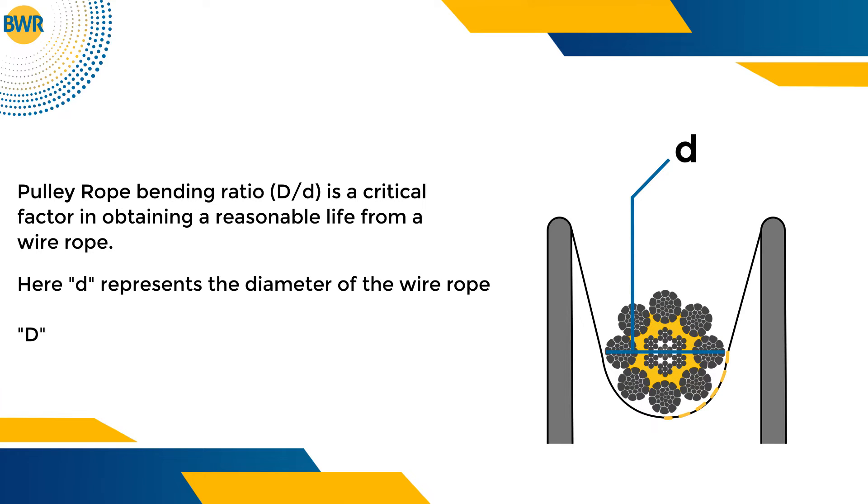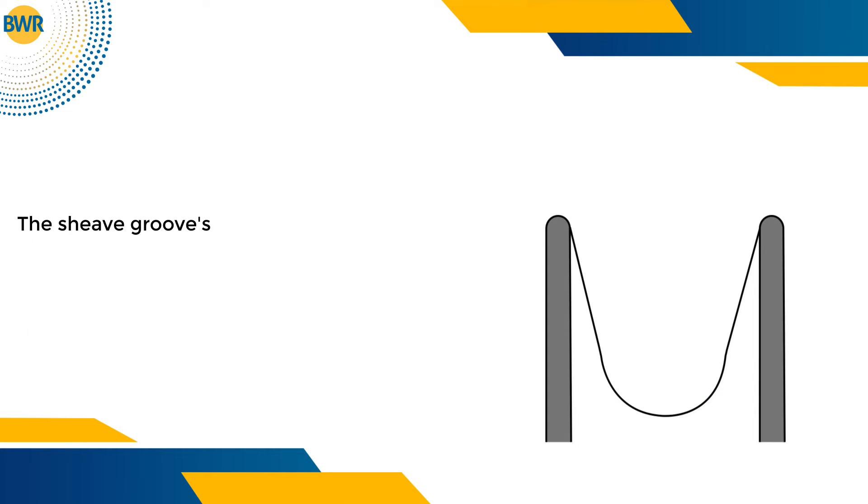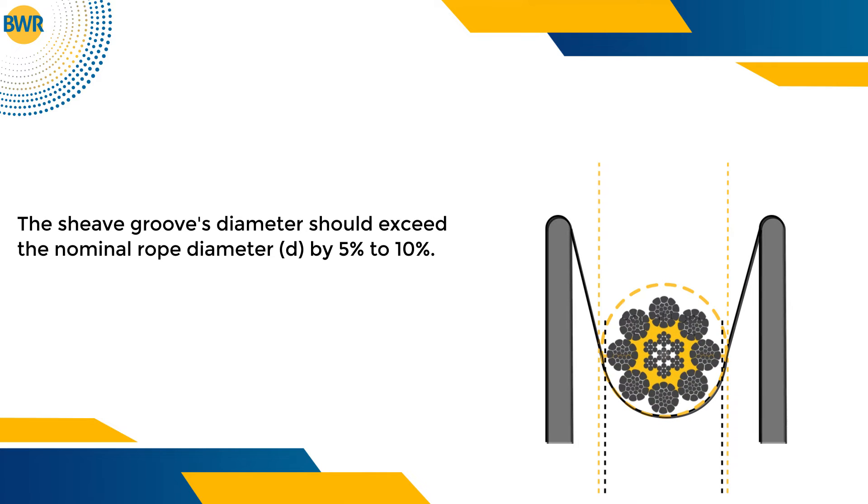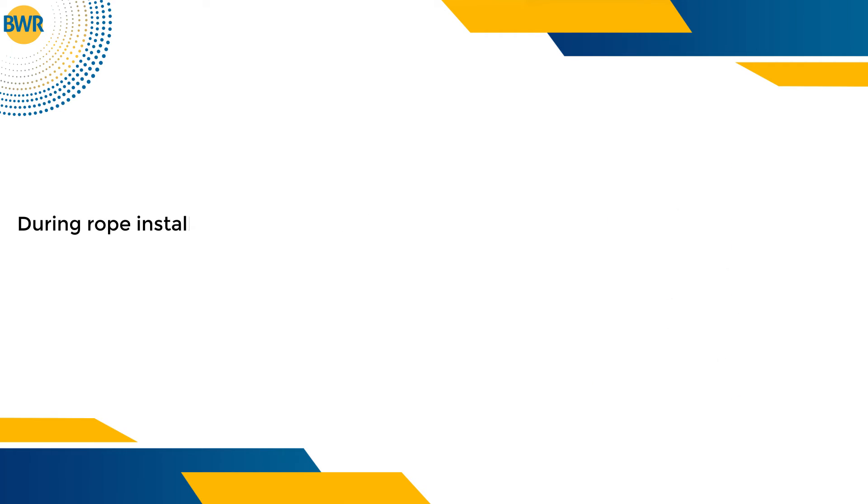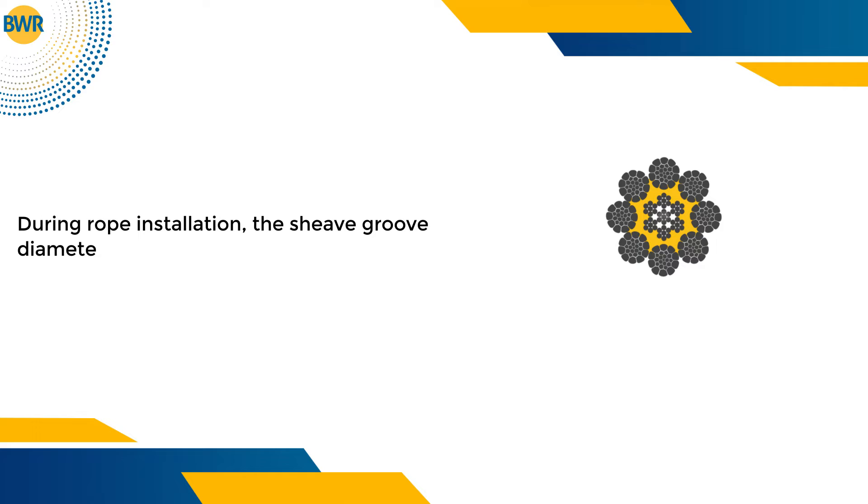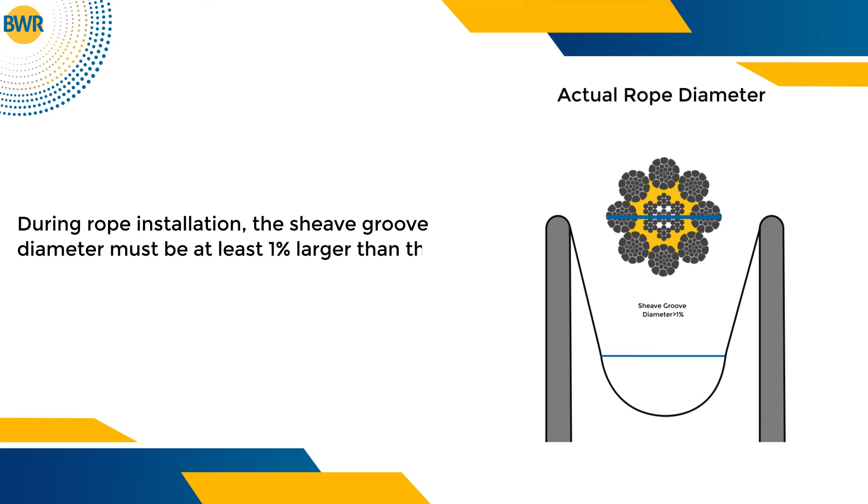Capital 'D' represents the diameter of the sheave groove. The sheave groove's diameter should exceed the nominal rope diameter by 5% to 10%. During rope installation, the sheave groove diameter must be at least 1% larger than the measured rope diameter.